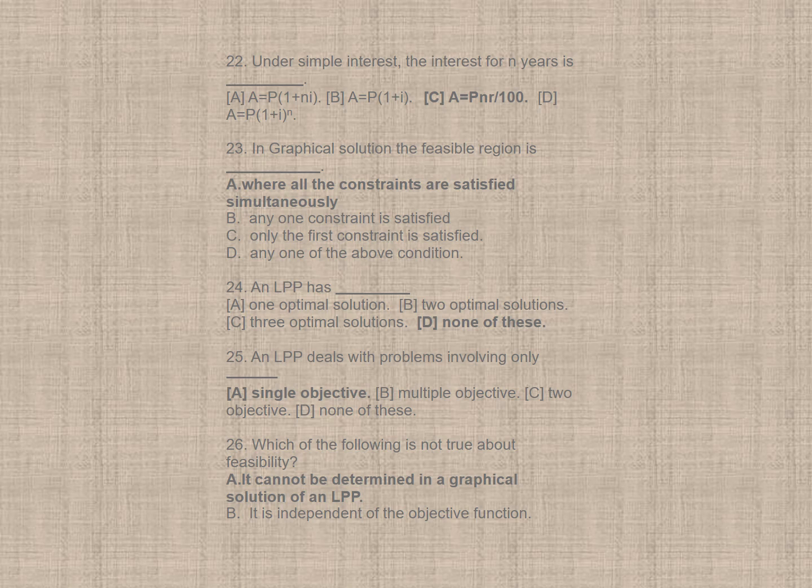Question 23. In graphical solution, the feasible region is A, where all constraints are satisfied simultaneously. Now, here it is from, you know, linear programming problem, it may be asked, so if it is of your interest, you can go through it. Question 24, that is, an LPP has, none of the options given here is correct, so correct option is D.